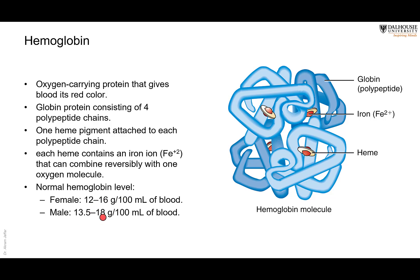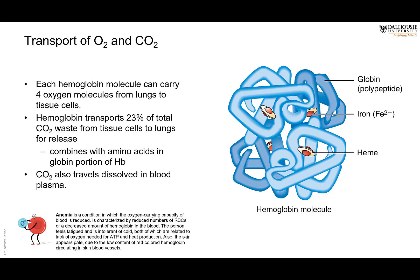The normal hemoglobin level is 12 to 16 grams per 100 mL of blood in females; it is higher in males because males have more red blood cells. Hemoglobin also transports CO2 — about 23%, or roughly one quarter, is transported by the globin portion, not the heme, so it does not compete with oxygen. Carbon monoxide, however, does compete with oxygen at the heme binding site.